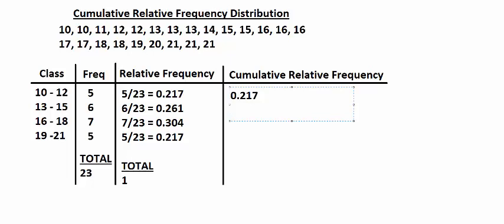For the second class, you're looking at the chances of being in the second class or the first class. So you're going to take the relative frequency of the first class plus the relative frequency of the second class. There is a little bit of rounding error here because I rounded to the third decimal place, but that comes out to be about 0.478.